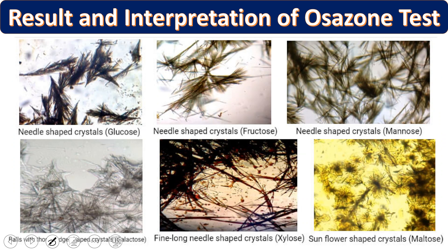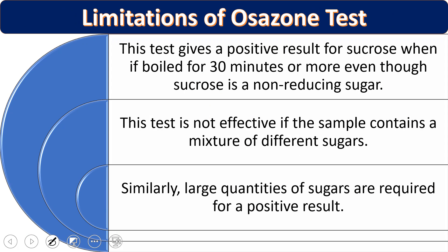Yellow crystals appear in tubes containing glucose or fructose within the first 10 minutes. Under the microscope you can see glucose crystals — needle-shaped; fructose crystals — needle-shaped; mannose crystals — also needle-shaped; lactose crystals — their characteristic shape; and maltose — sunflower-like crystals. Based on these crystal shapes and time of appearance, different reducing sugars can be differentiated.